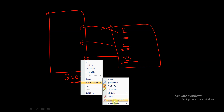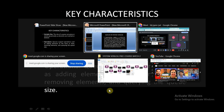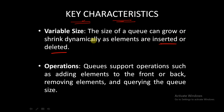Now, coming to the key characteristics: Variable size — the size of the queue can grow or shrink dynamically as elements are inserted or deleted. Operations — a queue supports operations such as adding elements to the front or back, removing elements, and querying the queue size. We will see these operations in upcoming slides.